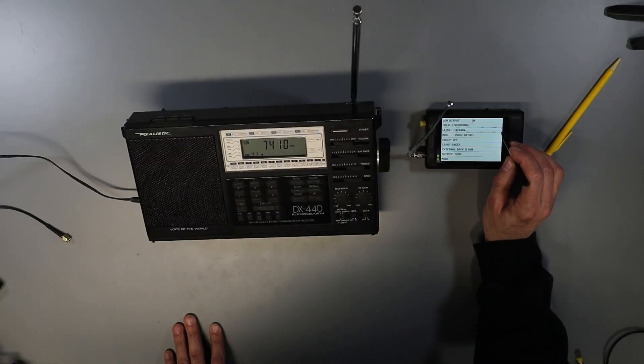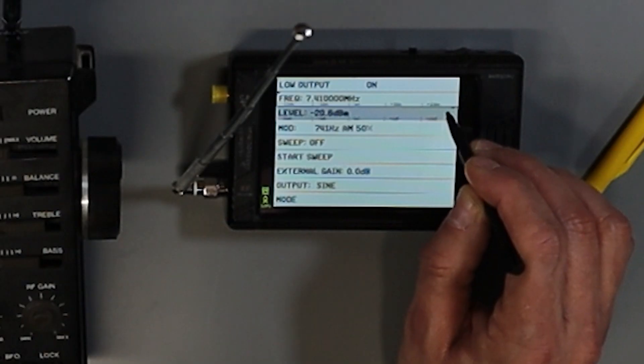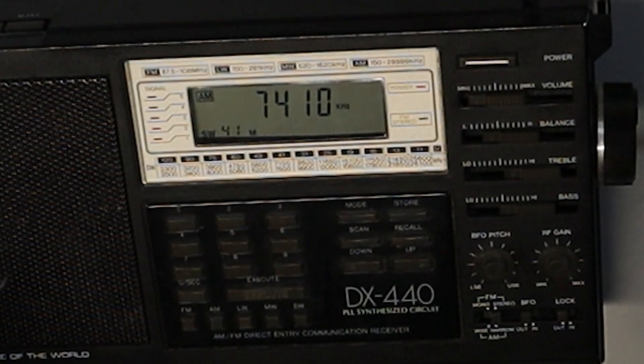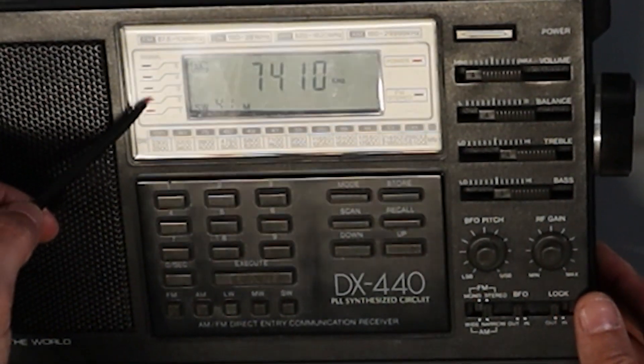And then over on the TinySA, if I lower the output level, you can hear that the signal is now much weaker, and in fact we're getting two bars on the signal meter.